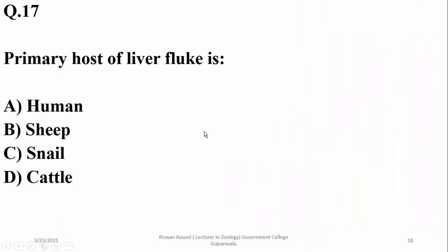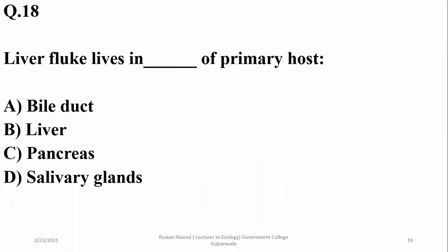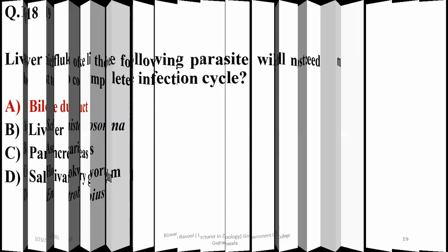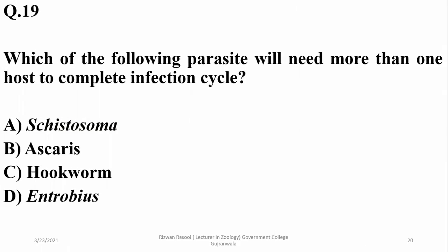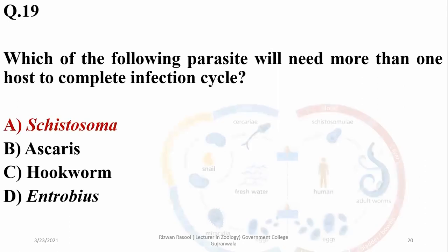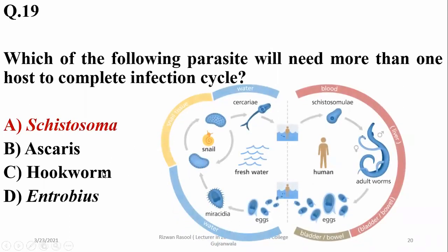Question fourteen: the primary host of the liver fluke is sheep, and the liver fluke resides in the bile duct of its primary host. Question fifteen: the parasite that requires more than one host to complete its infection cycle is Schistosoma or blood fluke. Other parasites like roundworms require only one host.